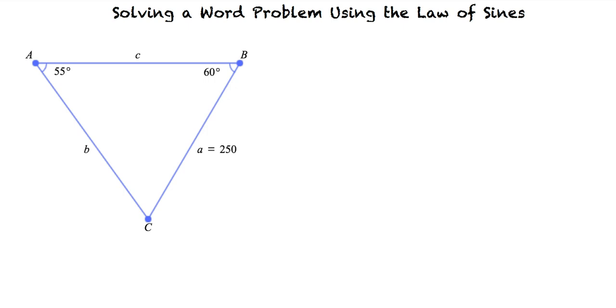Using the law of sines, we know that sine C over C equals sine A over A. Equivalently, C over sine C equals A over sine A.